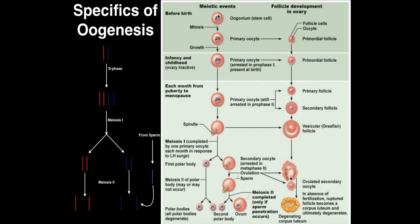Before birth, this oogonium is going to replicate — you're going to have a whole bunch of these oogonia, ultimately around 40,000 in a woman's lifetime. These oogonia are also going to grow, and growth occurs in interphase of the cell cycle. To prepare for meiosis, we have to go through G1, the S phase, and G2 of the cell cycle. G1 and G2 are growth phases, but the S phase is really important — that's where the DNA gets replicated. This ultimately occurs going into infancy and childhood, which is where we start meiosis one.